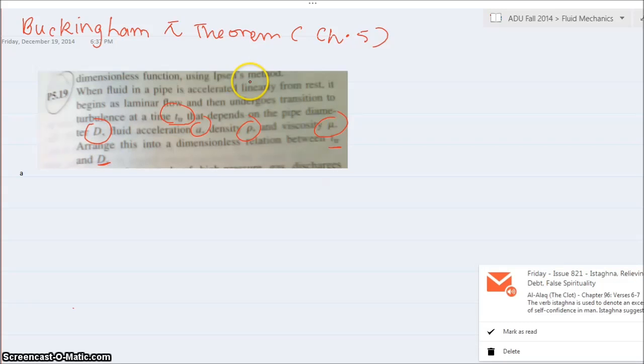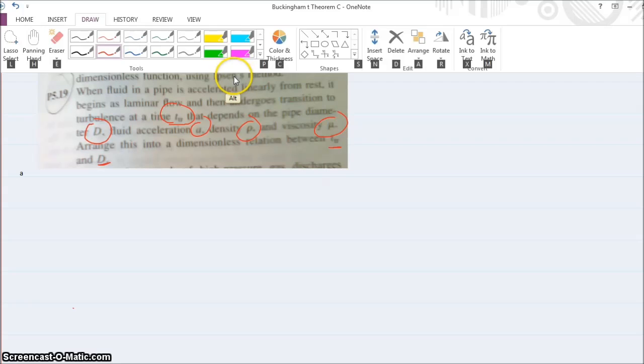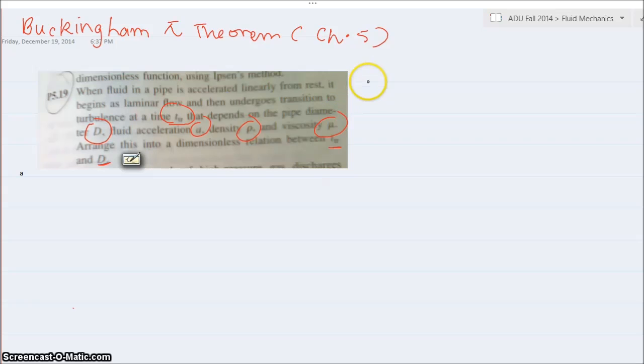Now, whenever we try to solve this kind of questions, what we got to understand is that we have to first of all write down all the unknowns that they have asked or mentioned in the questions. So let's start. So we have T_u, acceleration, diameter, rho, mu. 1, 2, 3, 4, 5.